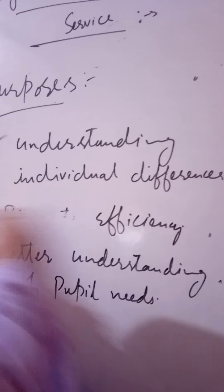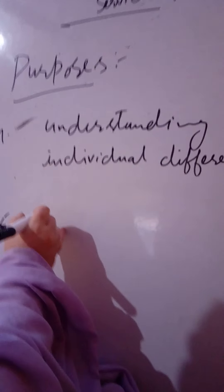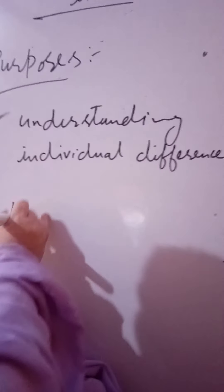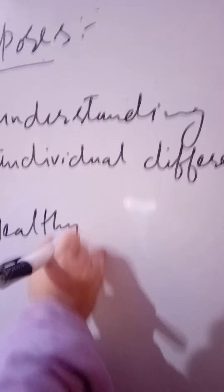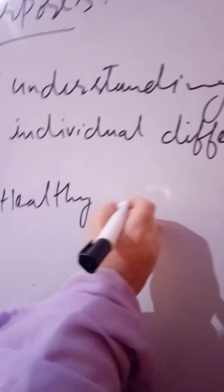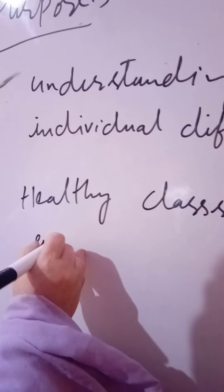Then comes healthy classroom relationship. If we want a healthy classroom relationship, we need to organize guidance services. The main purpose of organizing guidance services is to create healthy classroom situations, or you can say a healthy classroom environment.